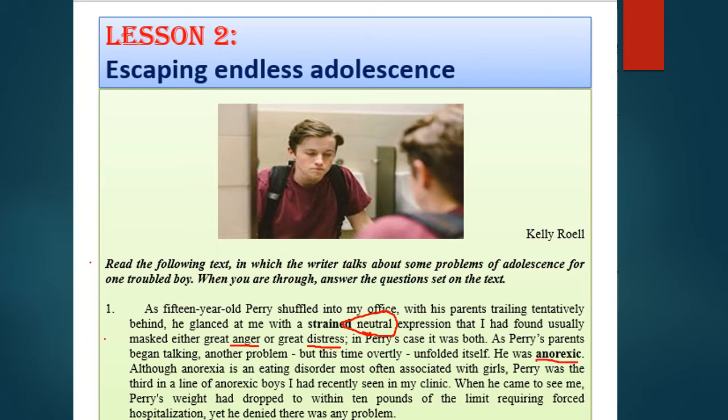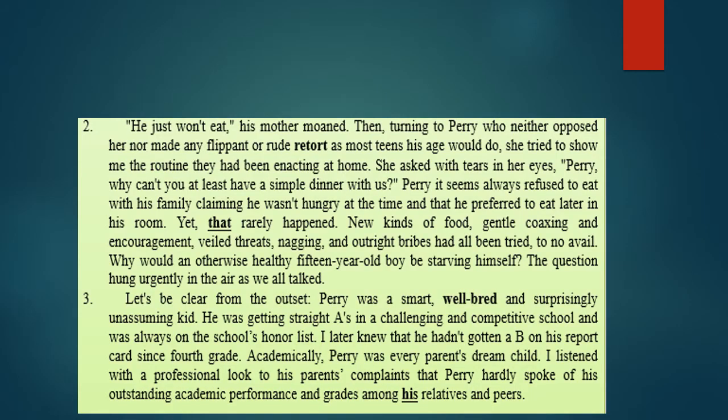As Perry's parents began talking, another problem overtly — meaning openly — unfolded itself. He was anorexic. Anorexia is an eating disorder where a person has very little or no appetite for food. Although anorexia is an eating disorder most often associated with girls, Perry was the third in a line of anorexic boys recently seen in the clinic. Nowadays it is increasing among boys because anxiety is increasing in the whole teenage population. When he came to see the narrator, Perry's weight had dropped to within 10 pounds of the limit requiring forced hospitalization, yet he denied there was any problem.